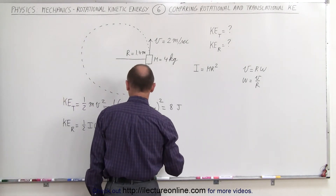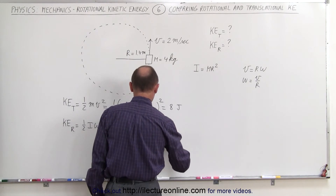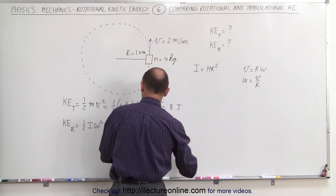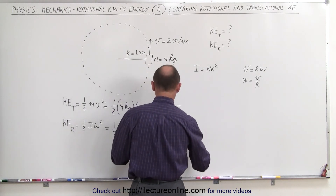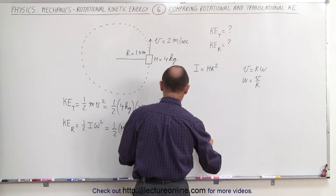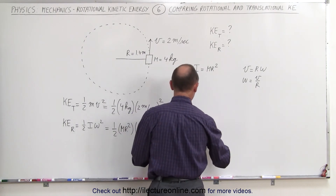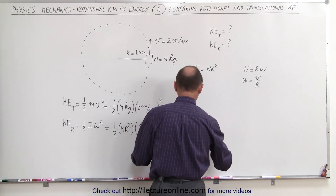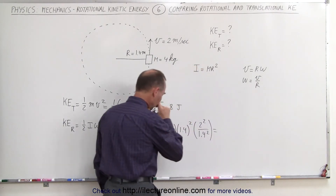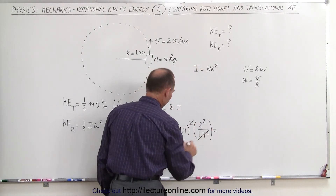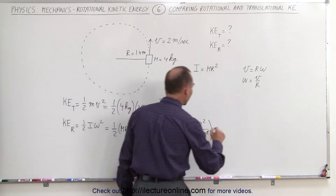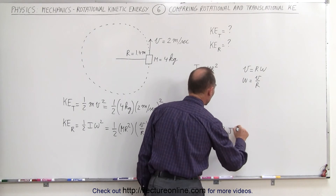So let's plug in the values. We have one half times the mass of the object, which is 4 kilograms, times r squared — r is 1.4, quantity squared — times velocity squared, which is 2 squared, divided by r squared, which is 1.4 squared. Notice that we have 1.4 squared over 1.4 squared, so those cancel. One half times 4, which is 2, times 2 squared, which is also 8 joules.